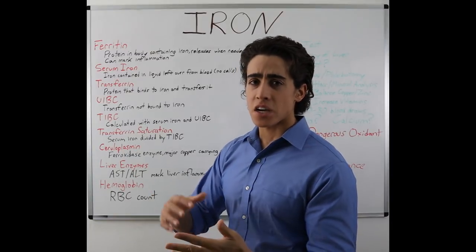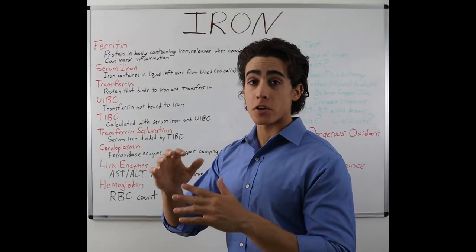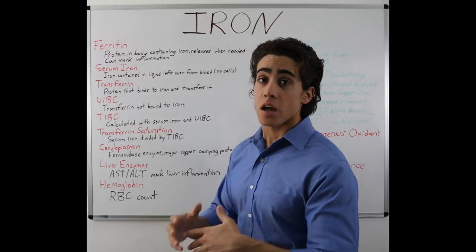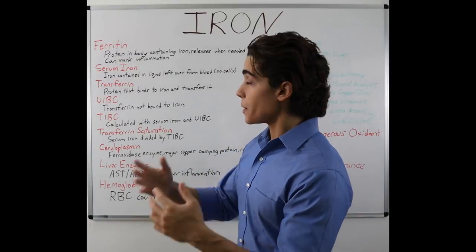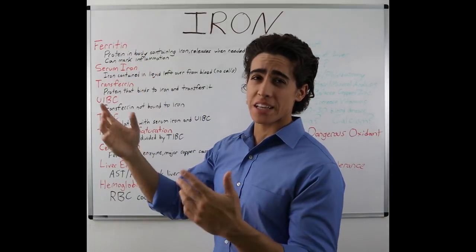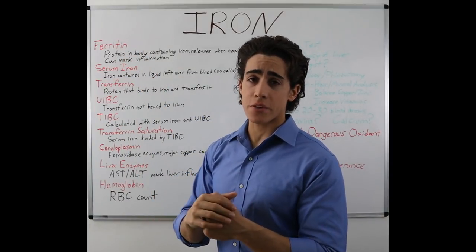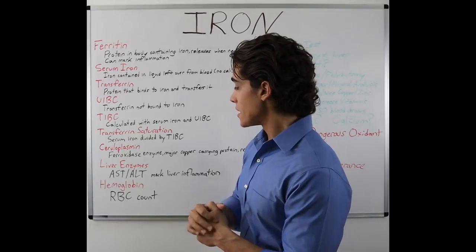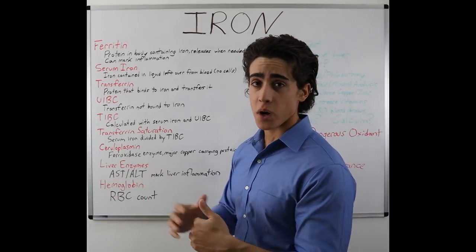Hemoglobin needs to be above a certain number in order for you to donate blood to reduce your iron overload. In my case, my ferritin was slightly elevated — it was 470, and the maximum in the range is 450 — and my liver enzymes were high as well.